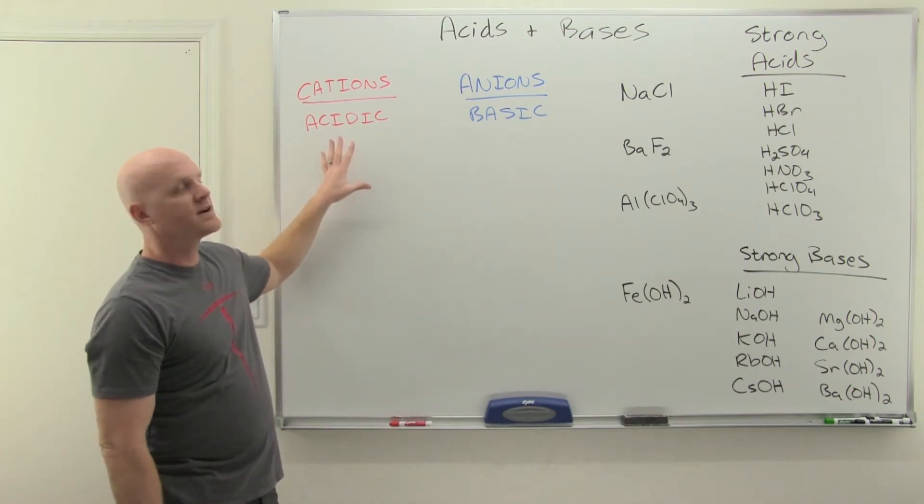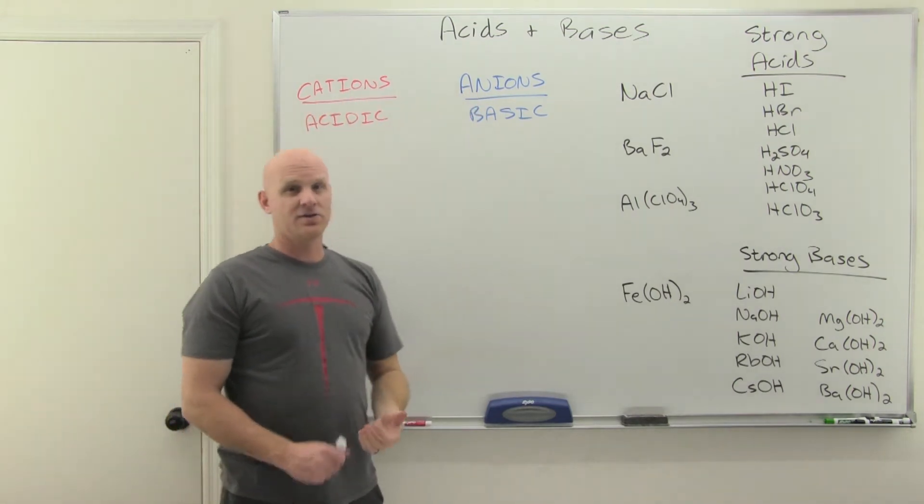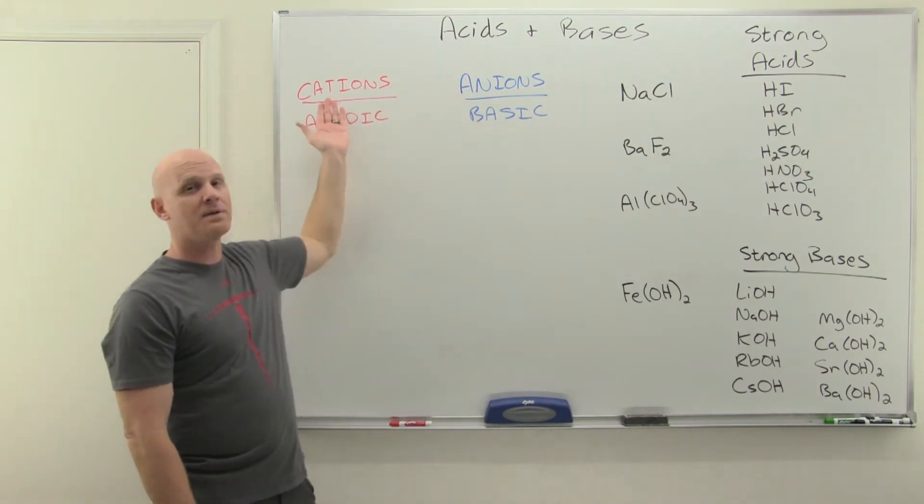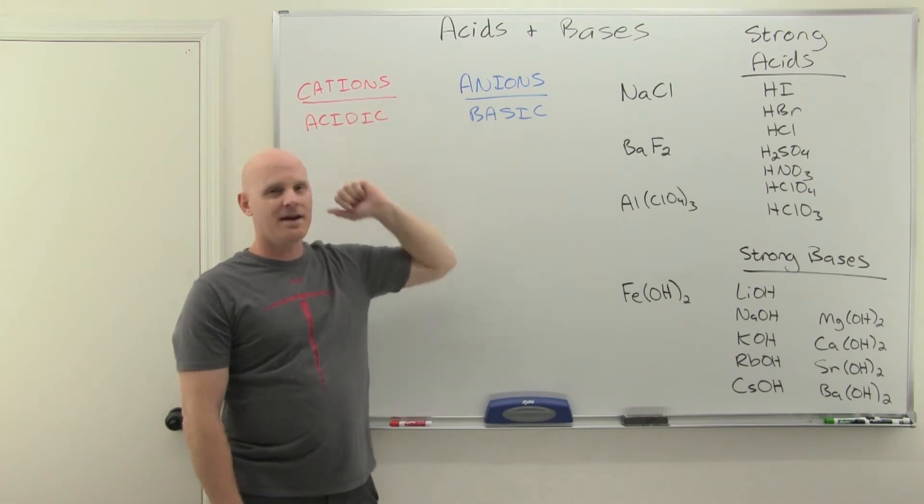We're going to analyze the cations and anions separately. It turns out that cations are usually acidic, and anions are usually basic. Cations meaning positive ions, anions meaning negative ions.